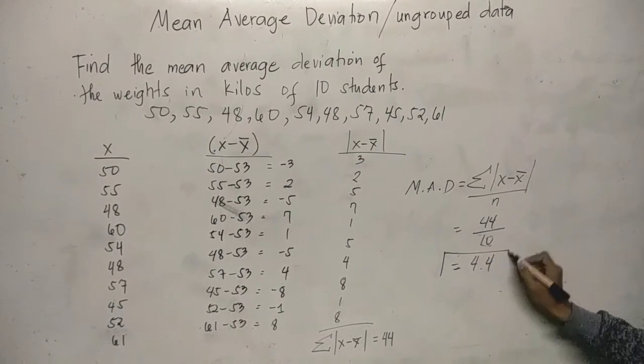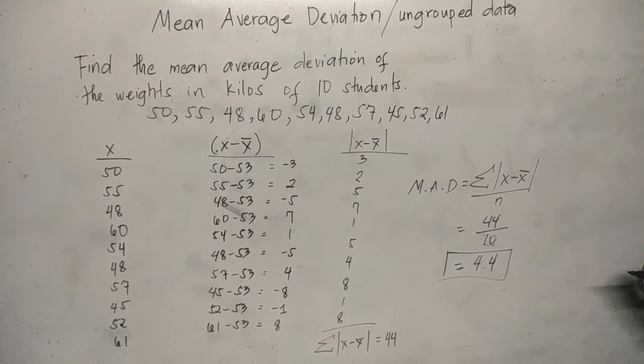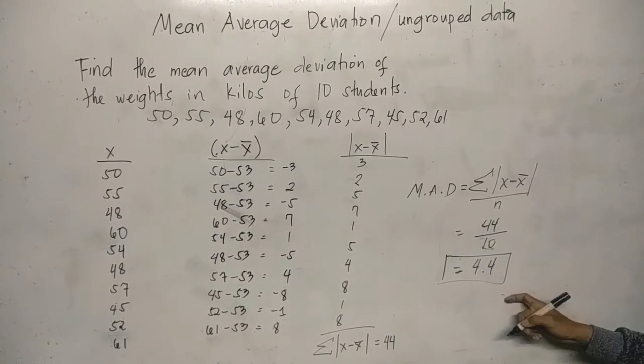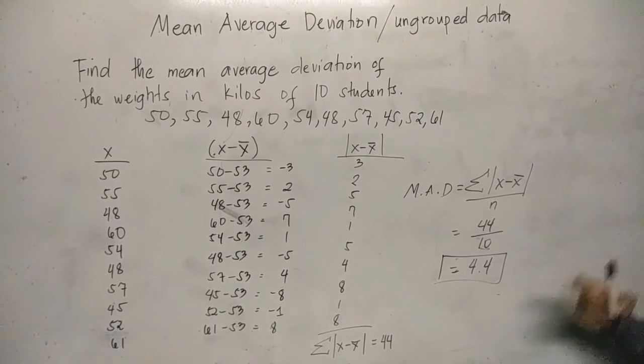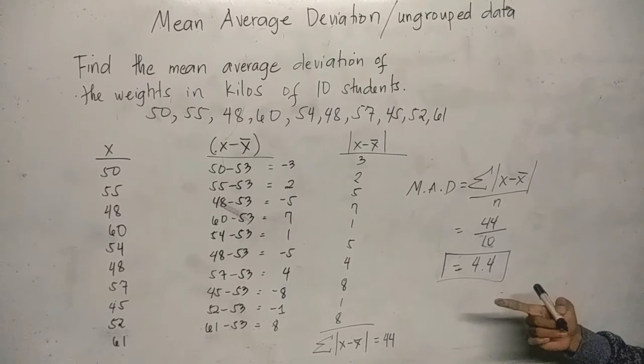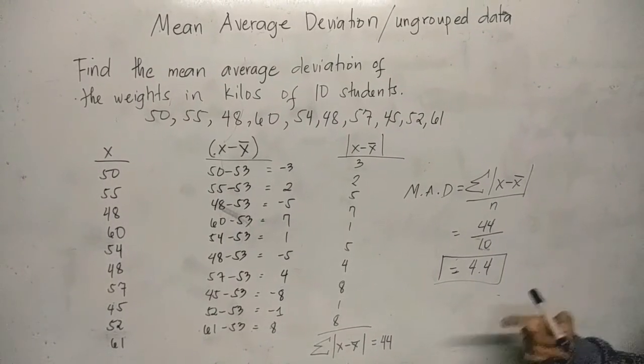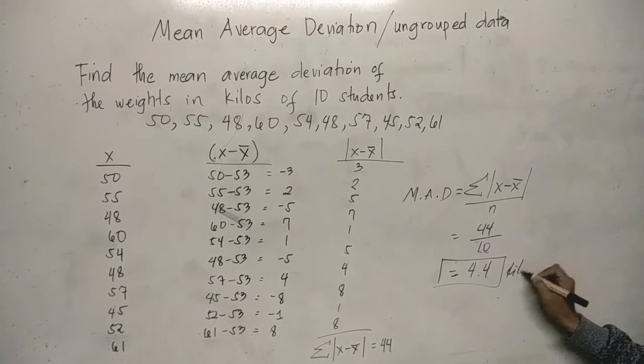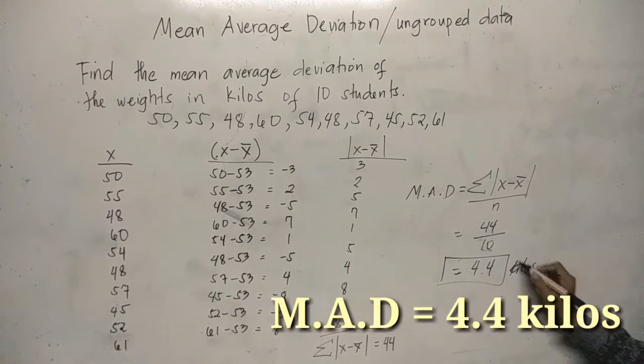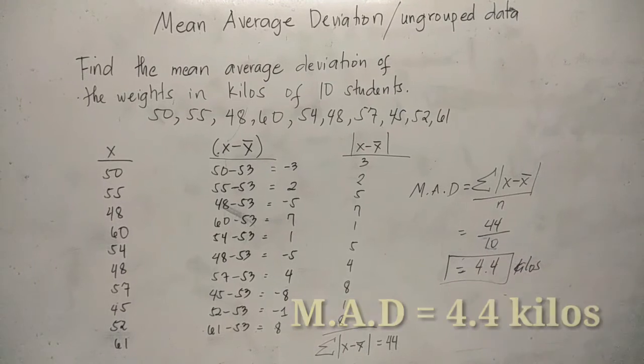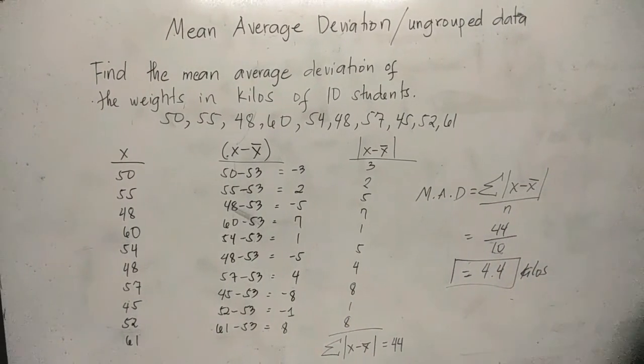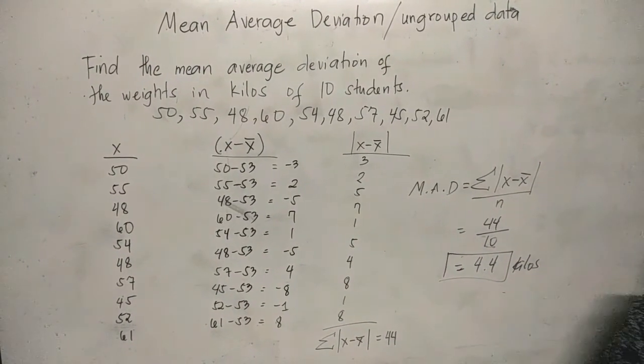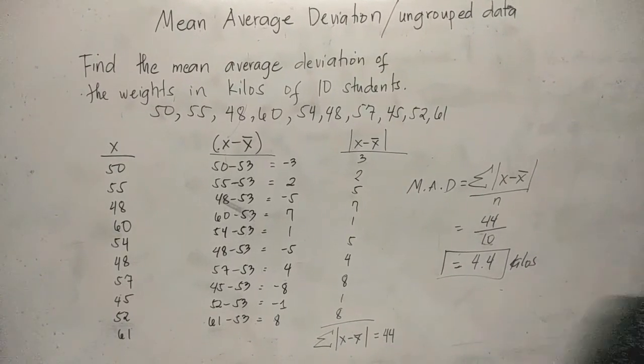The mean average deviation is 4.4. The interpretation is: on the average, the weights of the 10 students vary by 4.4 kilos. That's the final answer. So that's all for today. See you in our next video tutorials.